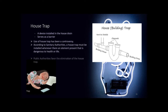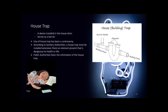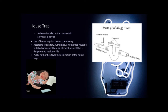The use of the house trap has been a controversy. Sanitary authorities say a house trap must be installed whenever there is an element dangerous to health or life. However, public authorities favor its elimination because its presence adversely reduces the discharge capacity of the sewer.